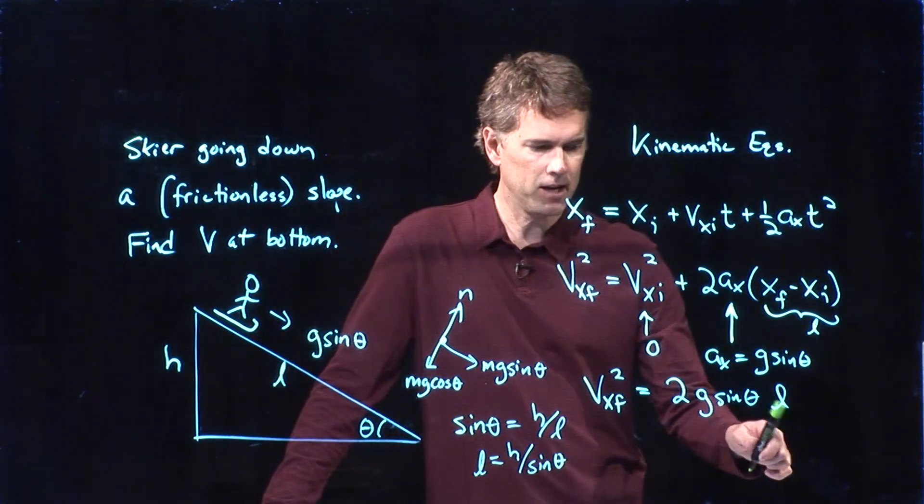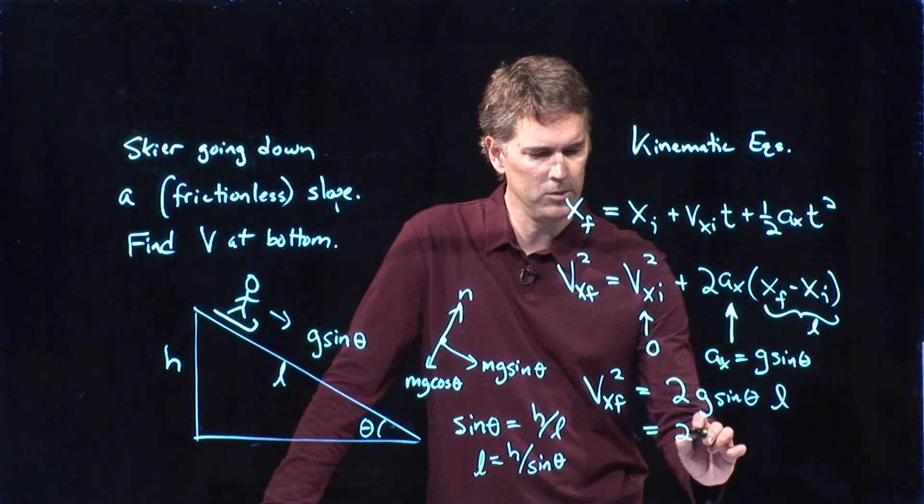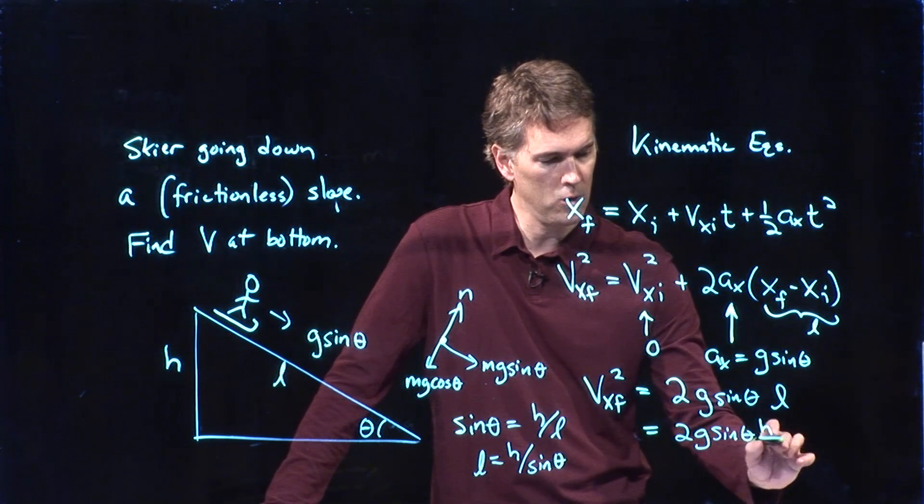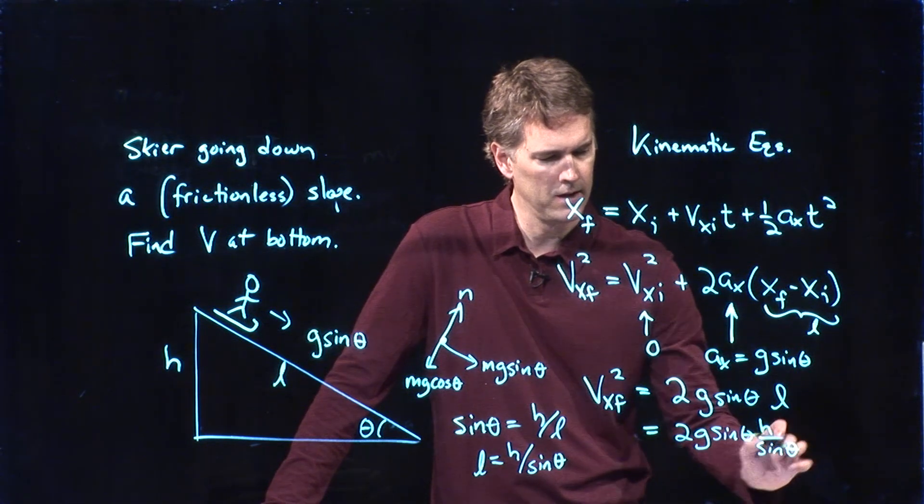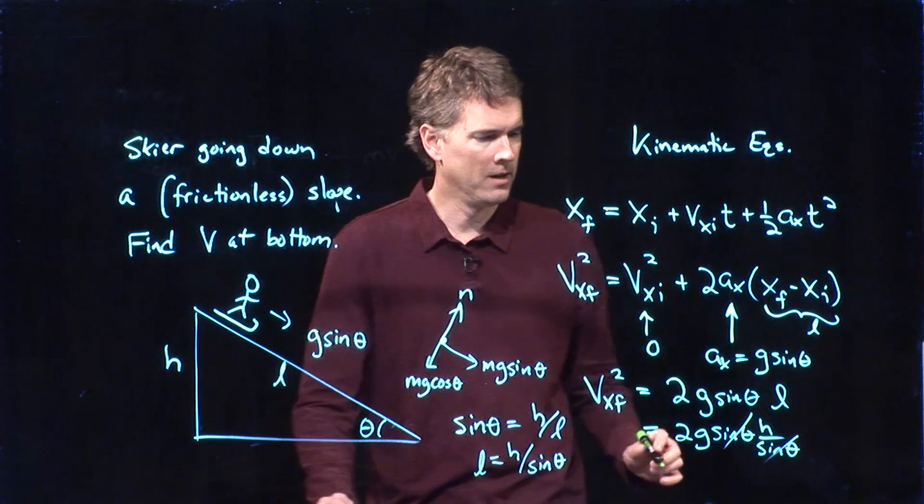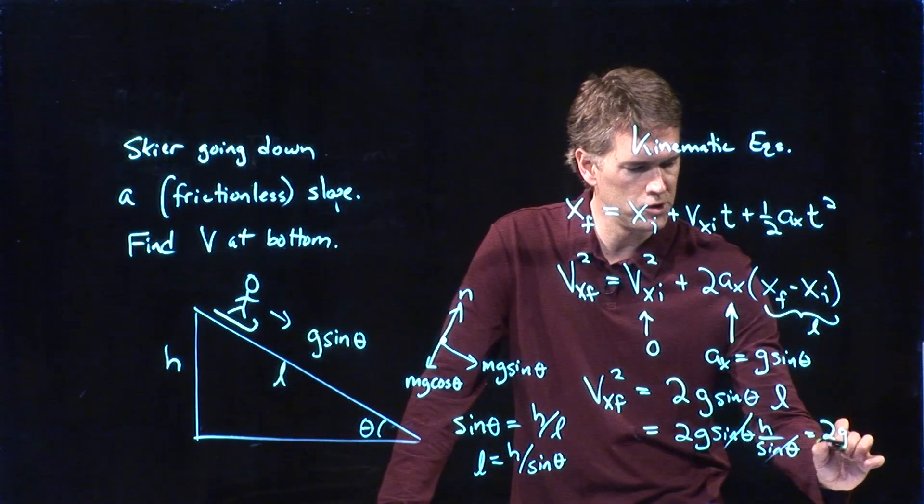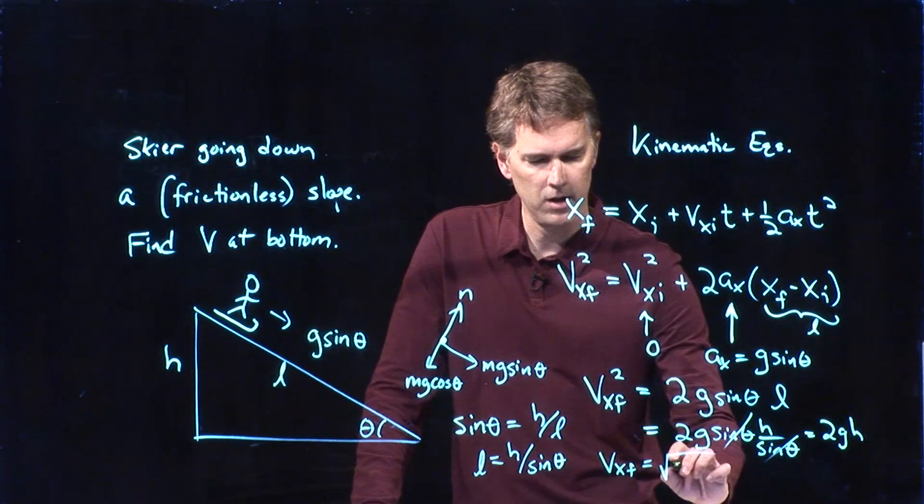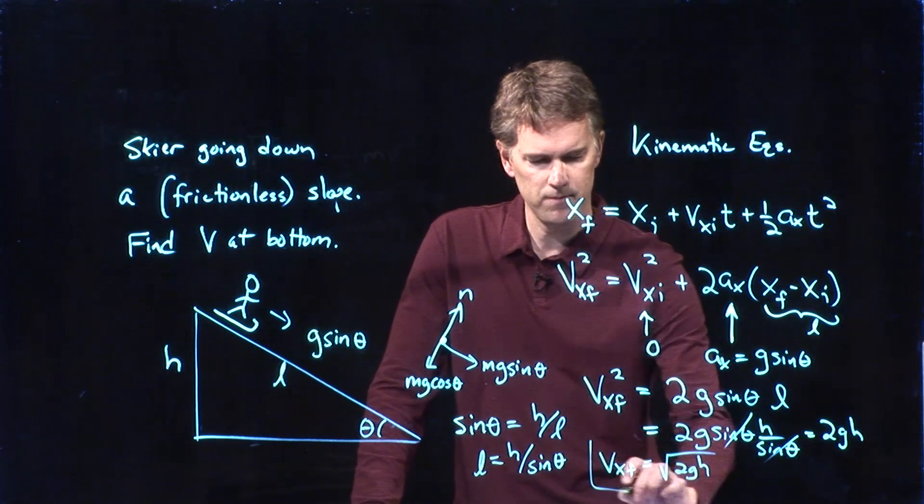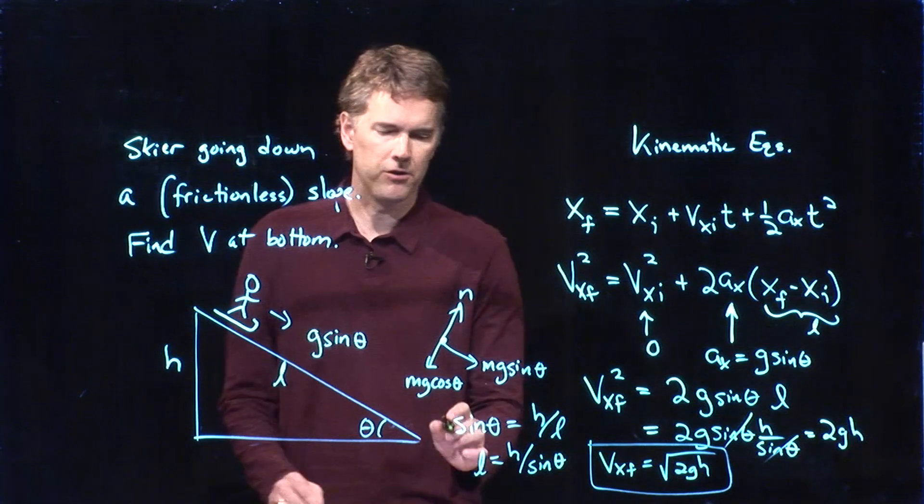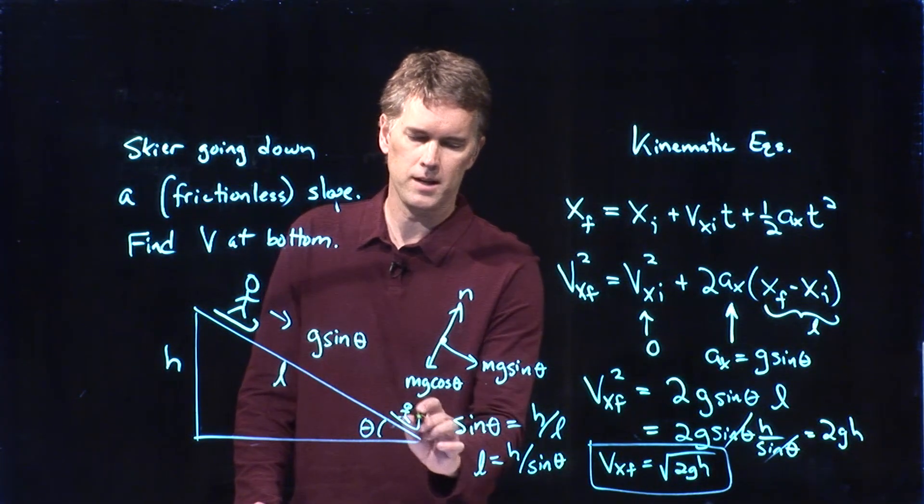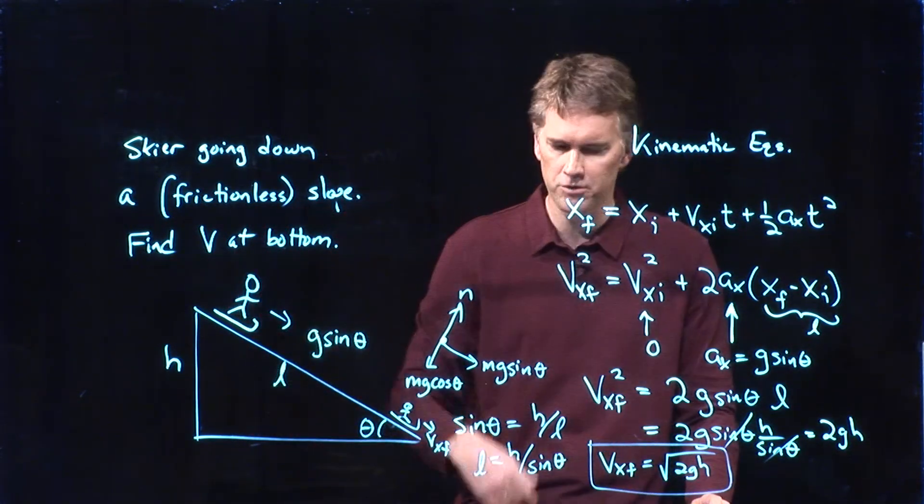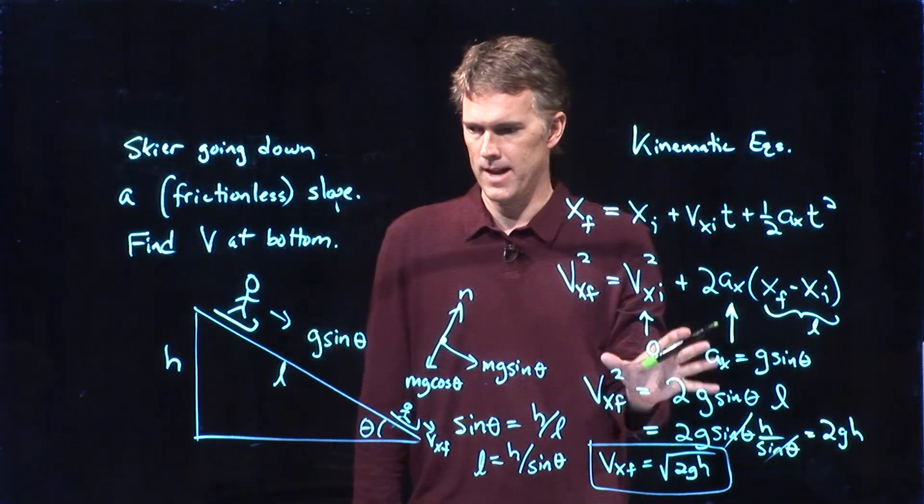And so now when I stick that in here, look what happens. I get 2g sine theta times L, which is H over sine theta. And the sines cancel out. And so that whole thing just becomes 2gh. And now I can calculate this final speed. Vxf is the square root of 2gh. Okay. And that's your speed when you get to the bottom. Here's our person at the bottom. And they're moving at vx final. Remember, we're in this rotated coordinate system. So that is their speed at the bottom. So this is how you do it with the kinematic equations.